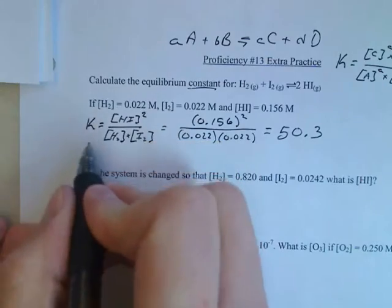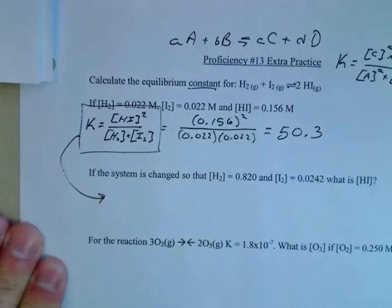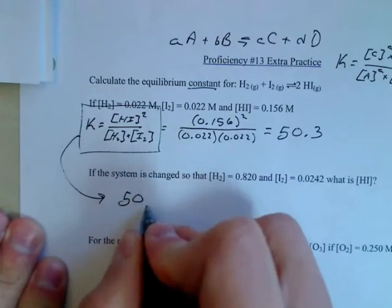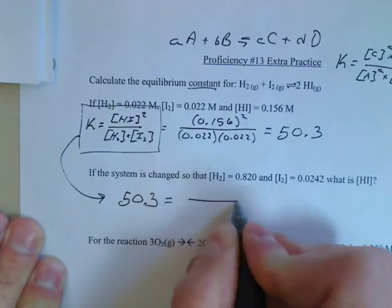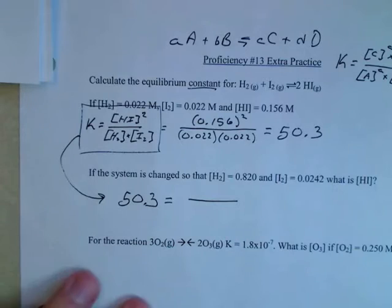So what we can do is we can take this equation right here and just bump it down here, but we know our K. So we know our K is 50.3. It says, what if you change your H2 and your I2, what's your HI going to be?